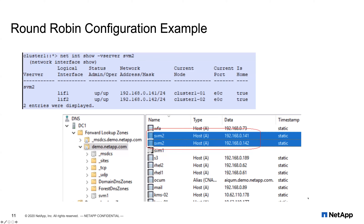In the top box you see we have two LIFs in the ONTAP CLI — LIF one on one node ending in .141 and one ending in .142. In the bottom box we have the DNS manager, and you can see in the name column we have two svm2 entries — two svm2.demo.netapp.com FQDNs — but in the data column we have two different IPs. We have also set the TTL on these DNS entries to 15 seconds per Microsoft best practices, and we have a demo coming up showing how to actually set up round robin.